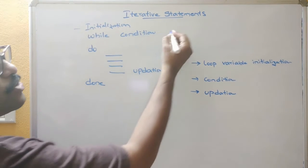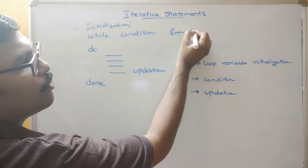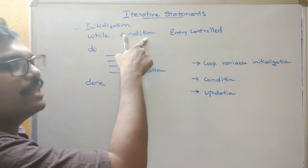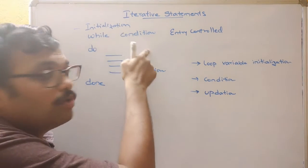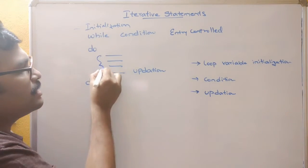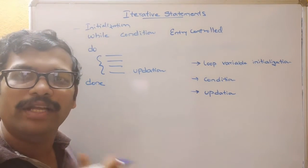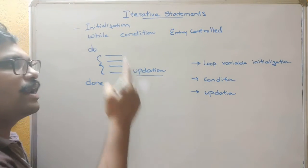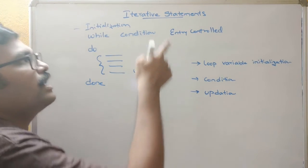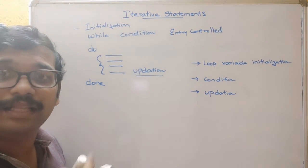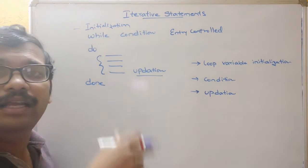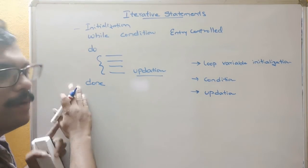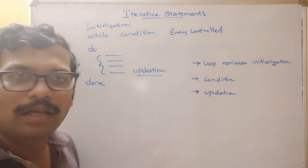The initialization should be done before, and inside the while we write the condition. This is also called an entry control loop because at the entry itself we check the condition — if the condition is true then only the control enters into the loop. The instructions keep executing until the condition becomes false, and the updation done each iteration reflects on this condition.